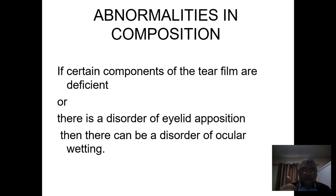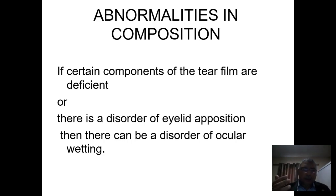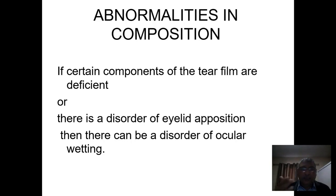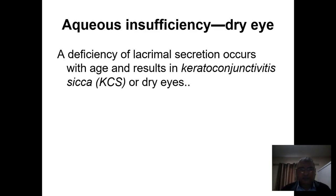The lipid component of the tear film is the outer layer preventing evaporation of the aqueous component, and this is secreted by the meibomian glands in the lids. The aqueous component is secreted by the lacrimal gland. The mucin component is secreted by the goblet cells in the conjunctiva.